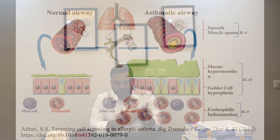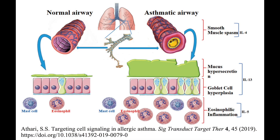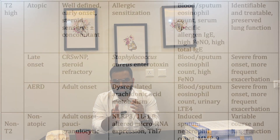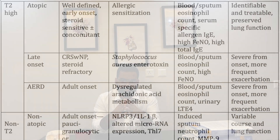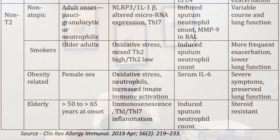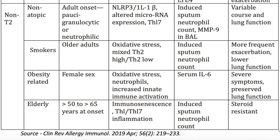Asthma. As ENTs, we should be able to identify and diagnose this disorder. Asthma is a heterogeneous disorder characterized by chronic airway inflammation and variable expiratory airflow limitation. It can be allergic or non-allergic. The other phenotypes of asthma are late onset eosinophilic asthma, exercise-induced asthma, obesity-related asthma, or neutrophilic asthma.